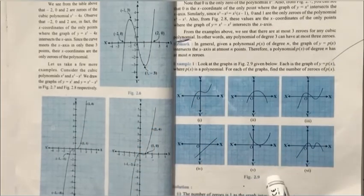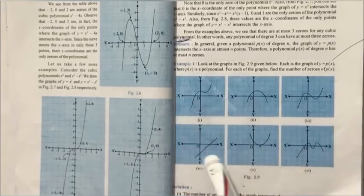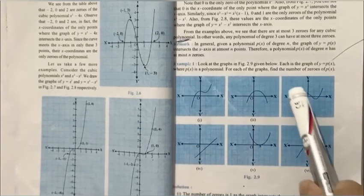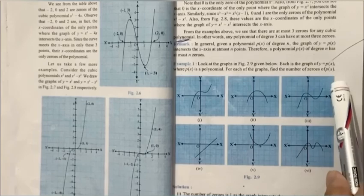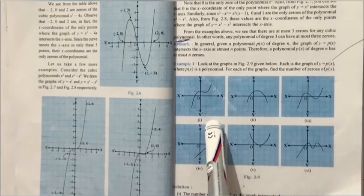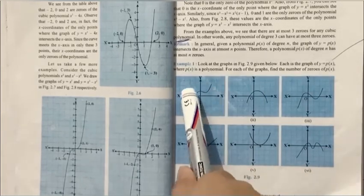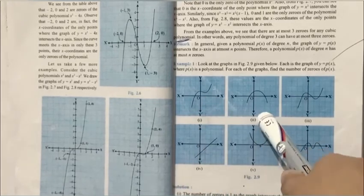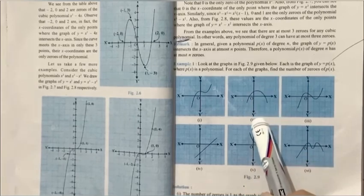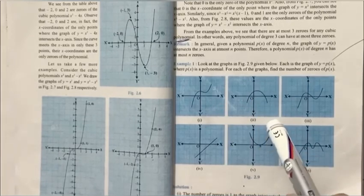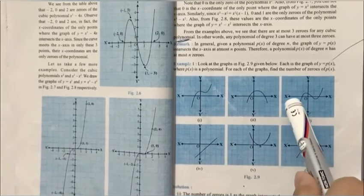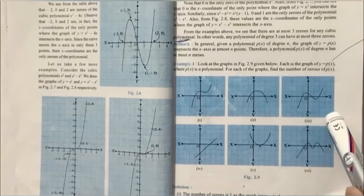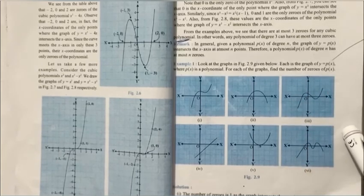Now let's do this Example Number 1, where you're given some polynomial graphs and you have to find the number of zeros. In the first part, you see the graph is intersecting at one point on the x-axis, so the number of zeros would be 1. Here the graph intersects at 2 points, so number of zeros would be 2. In the third, you can check at 3 points the graph intersects, so number of zeros would be 3.